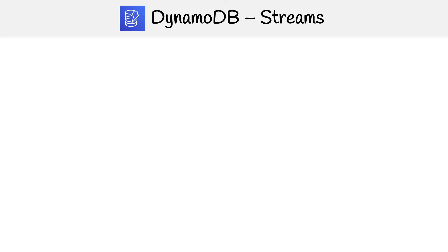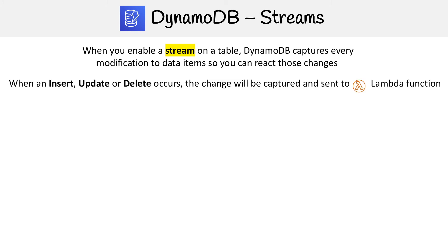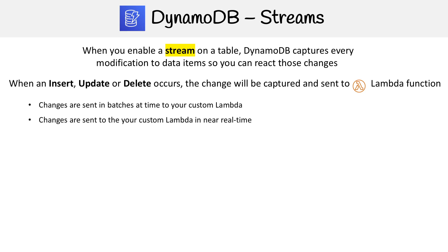DynamoDB has a functionality called streams. When you enable streams on a table, DynamoDB is going to capture every modification to data items so that you can react to those changes. So if an insert, update, or delete occurs, that change will be captured and then sent to a lambda function. Changes are sent in batches to your custom lambda in near real time.